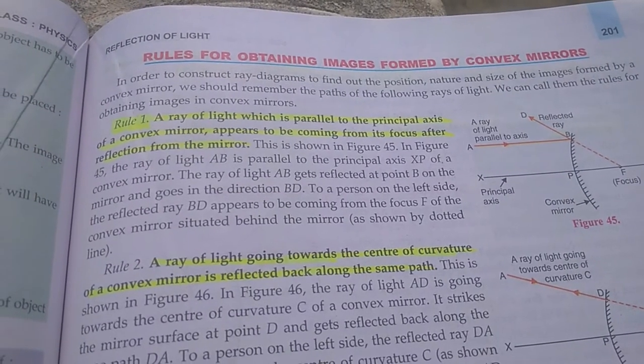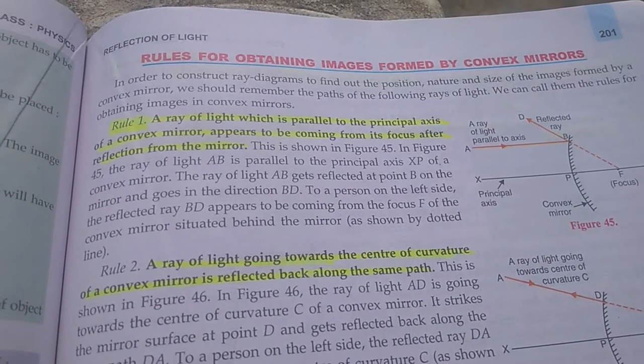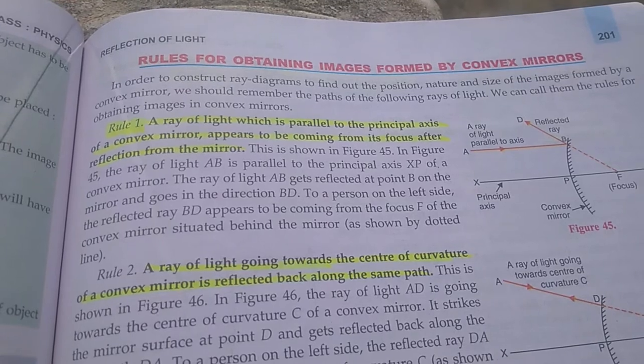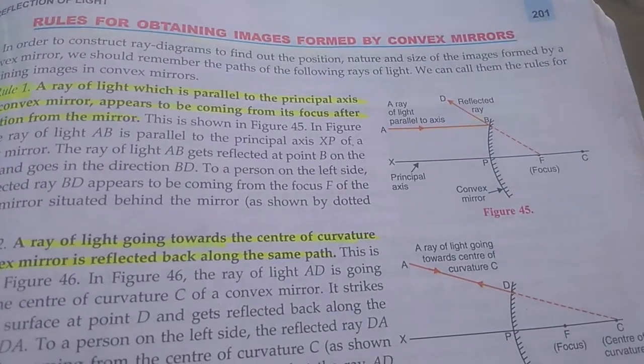Rule number one. A ray of light which is parallel to the principal axis of a convex mirror appears to be coming from its focus after reflection from the mirror. You can see the image.